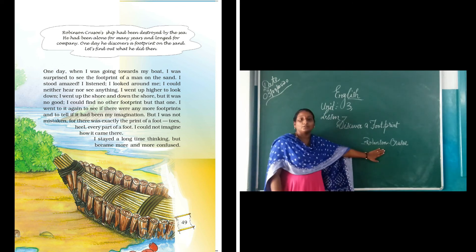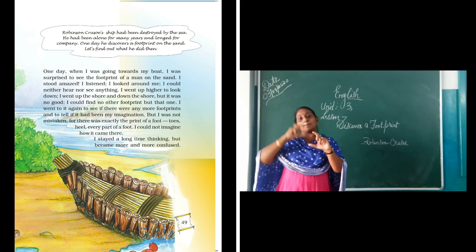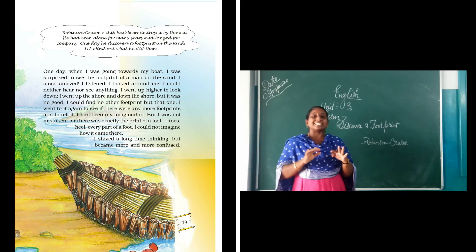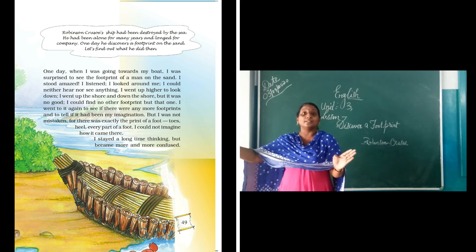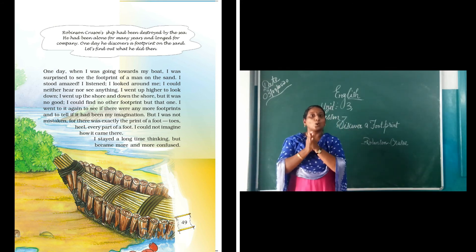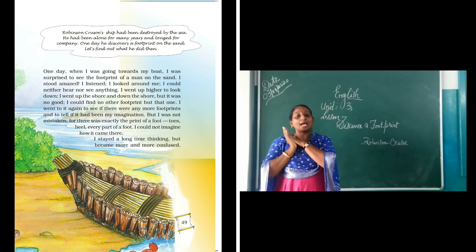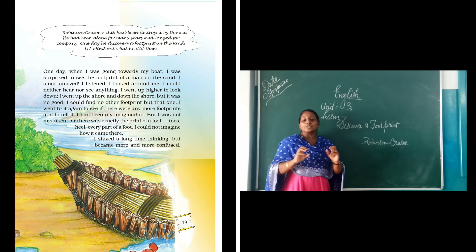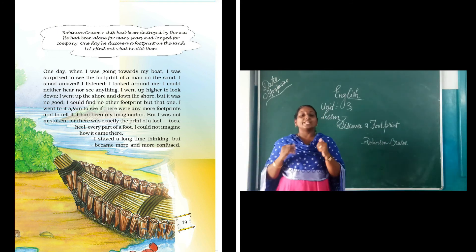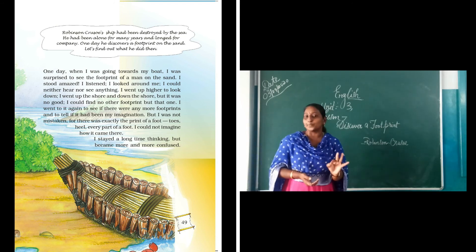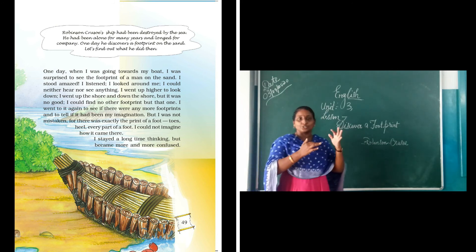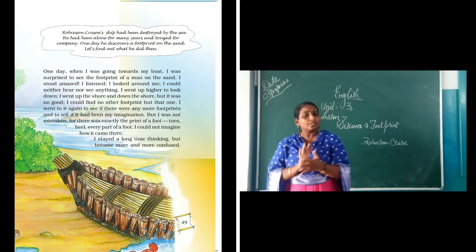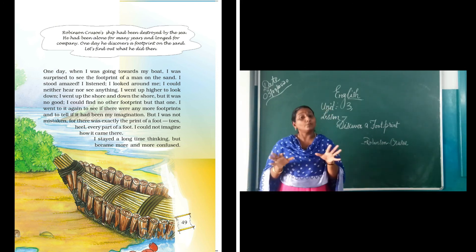So the explanation of this first page goes like this. Robinson was traveling and when his ship broke down he landed on an island and was living there with no one. That means he was living in that whole island all alone for many years. One day when he was going towards his boat — his boat, because he had been living there for years and surviving on fish and plants — what did he find? He found a footprint of a man on the sand. Just like when we go to a seashore and walk without shoes, our footprints are there on the sand. So here also, when the author was moving towards his boat, he saw a footprint and he was so amazed.